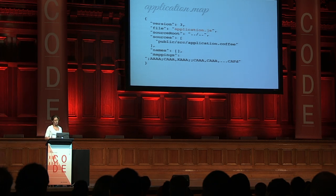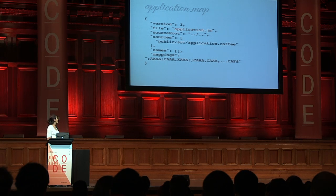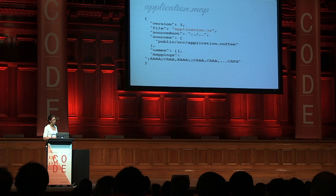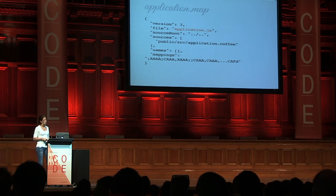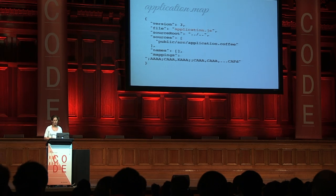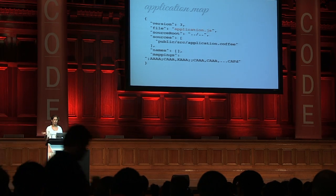The names array — if you have a lot more functions in your file, it will have a list of all your variables and method names that appear throughout your code. And then the last one, which is the most important thing, is mappings. Mappings is not really readable for us, but this is how it finds where all the other methods that you're looking for are.